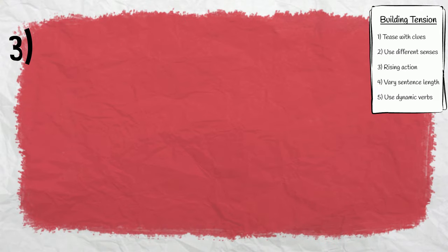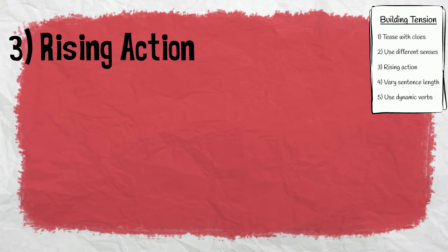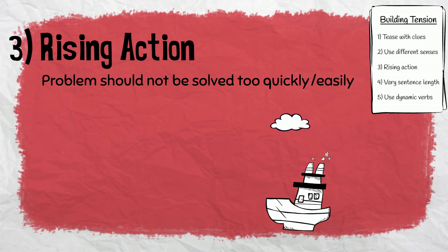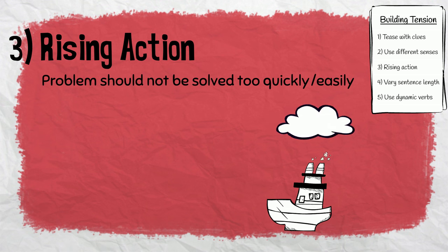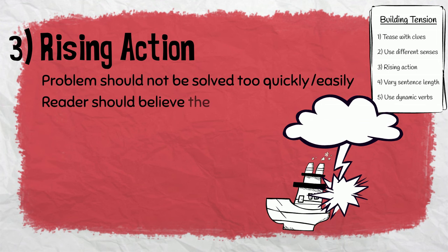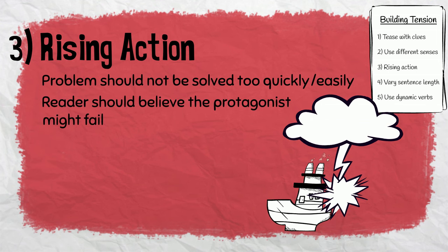Number three: rising action. The problem, or conflict, should not be solved too quickly or too easily. To build suspense, the threat should get closer and closer before it strikes. The reader should believe that your main character might fail. Have fun toying with the reader through your writing.